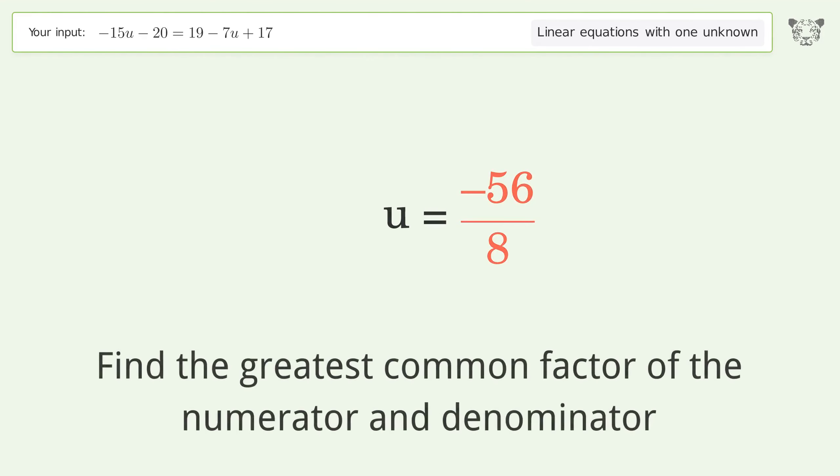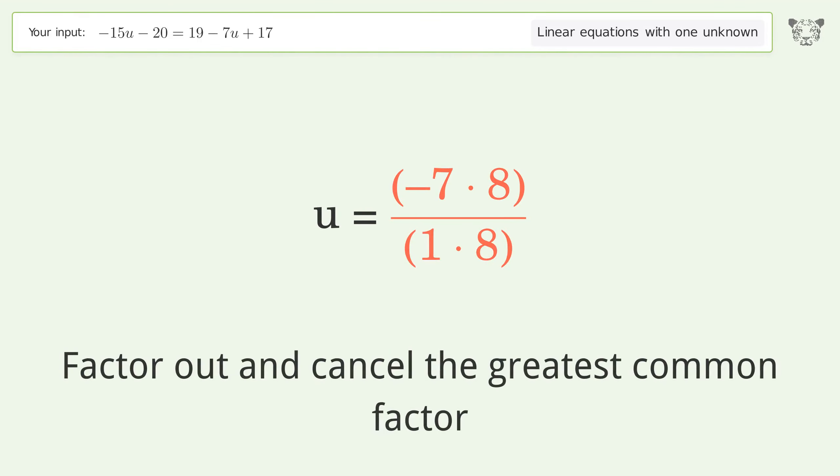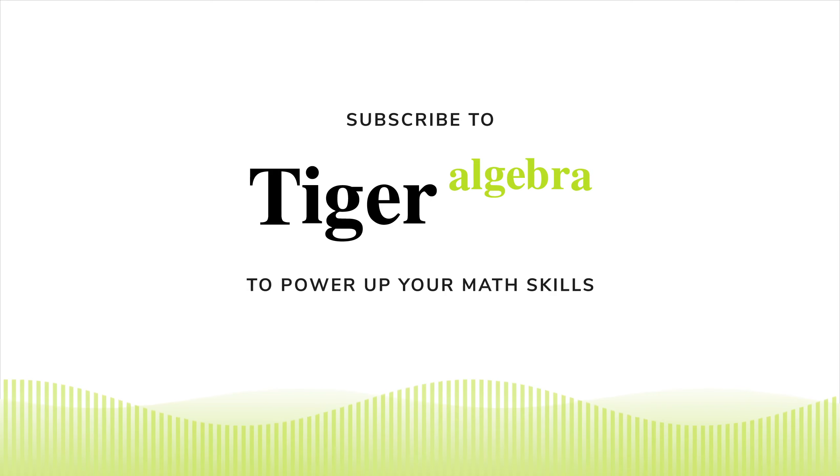Move the negative sign from the denominator to the numerator. Find the greatest common factor of the numerator and denominator. Factor out and cancel the greatest common factor. And so the final result is u equals negative 7.